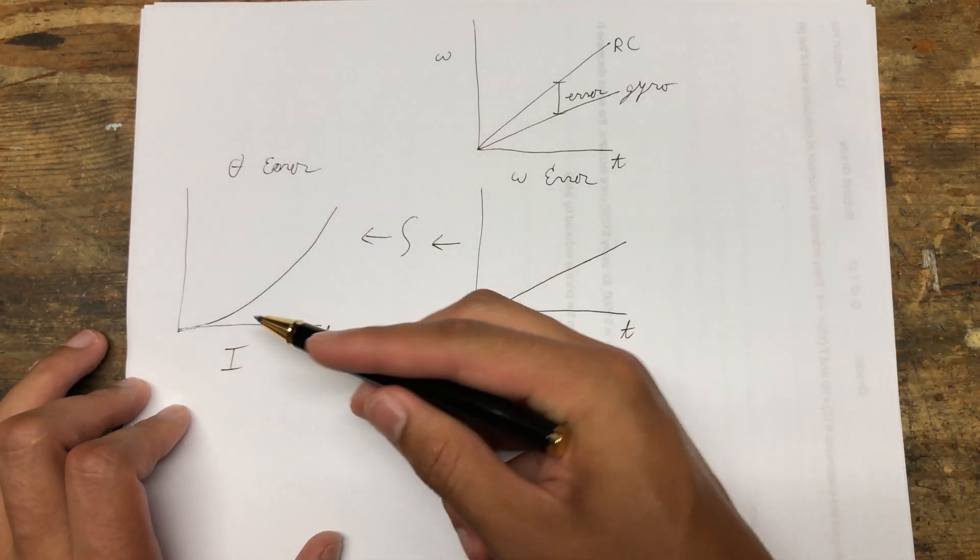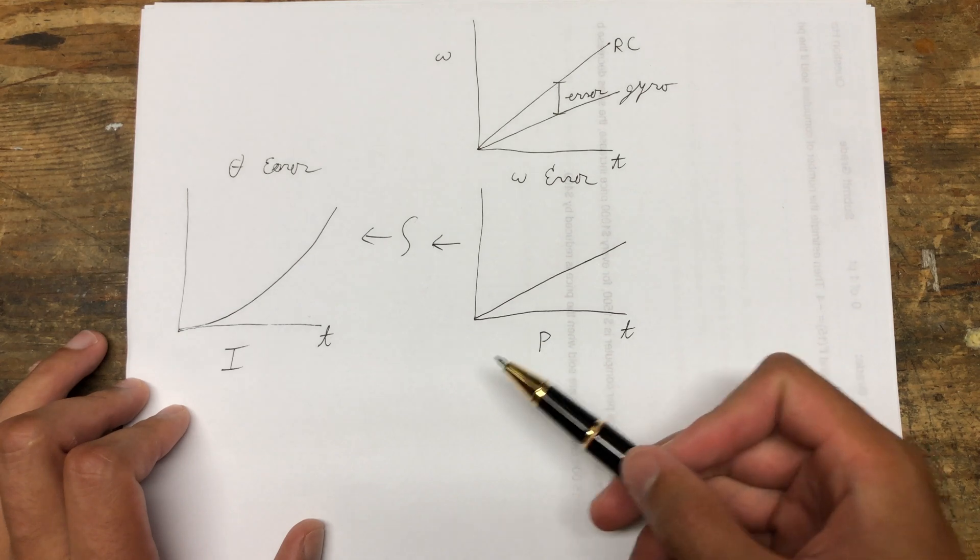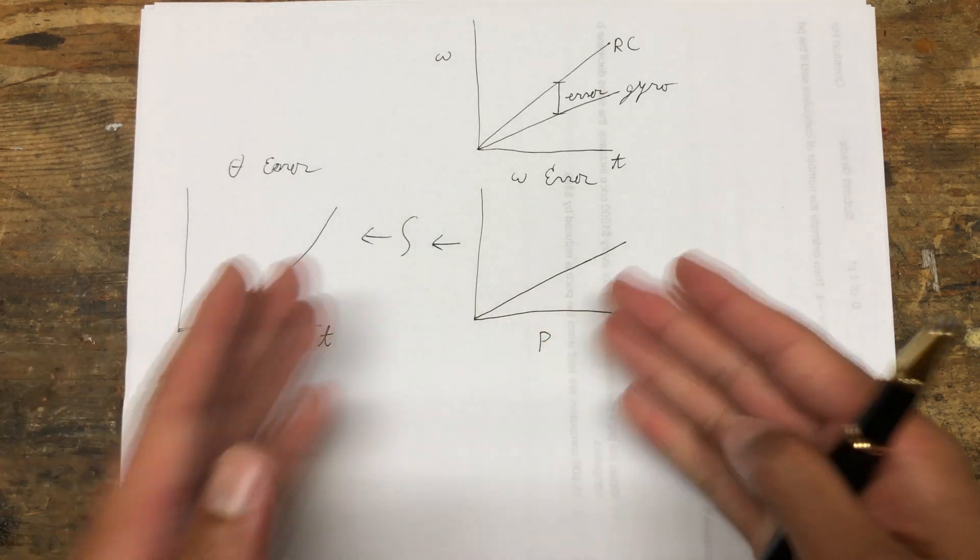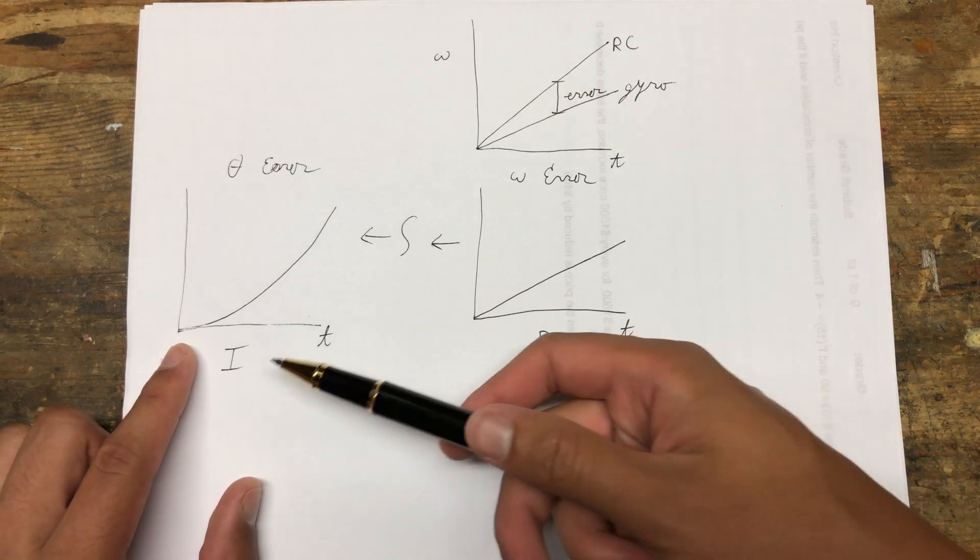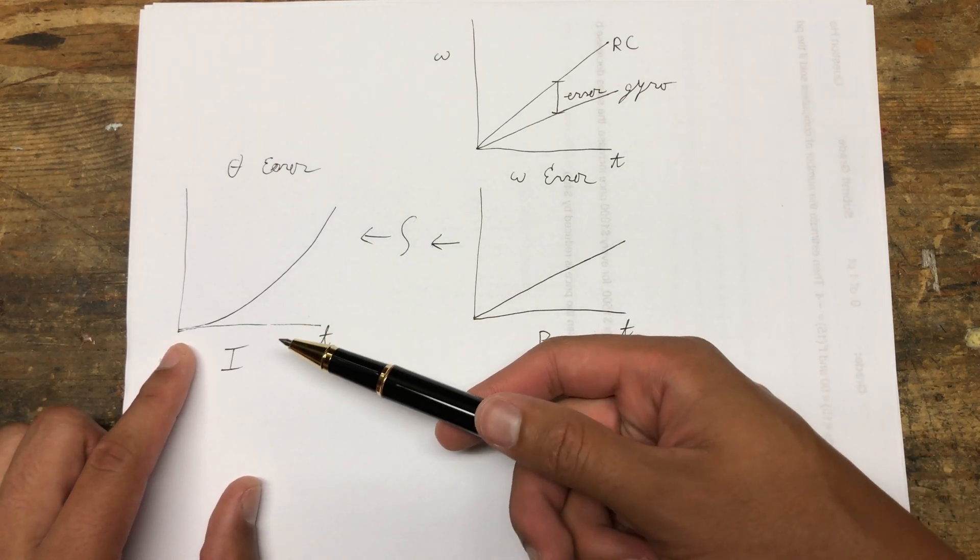This is what the I-term reacts to. Because it's looking over a span of time to figure out the area, this is why the I-term is good for long-term errors and reacting to long-term errors.